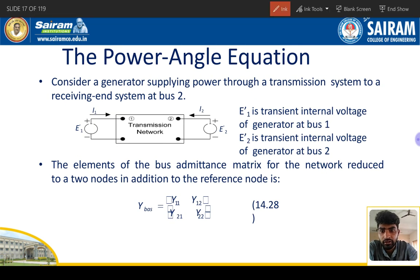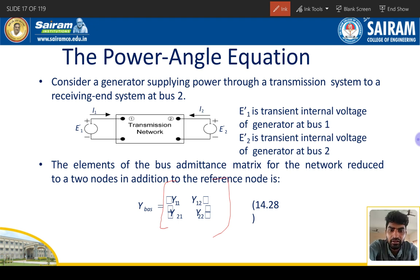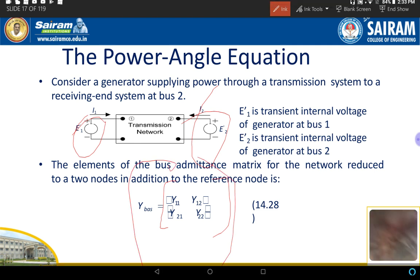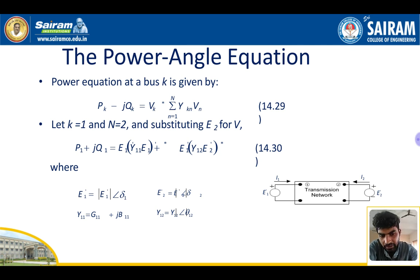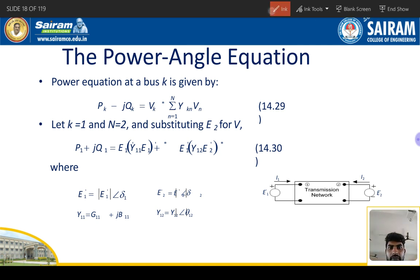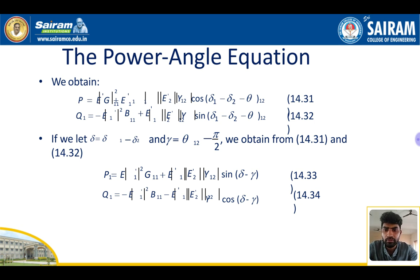In the transmission network, there is E1 and E2. This is the Y-bus formation: Y11, Y12, Y21, Y22. The transient network may be transmission lines. Y11 is the admittance from bus 1 to 1, Y12 from 1 to 2, Y21 from 2 to 1, Y22 from 2 to 2. The transient internal voltage is at buses 1, 2, and 3, with constant internal voltage. From this, active power and reactive power are obtained, and by simplifying the admittance matrix you get the power angle equation.